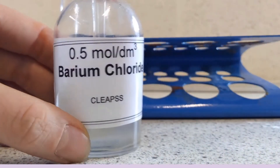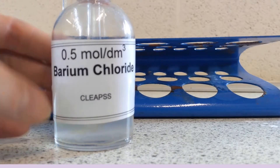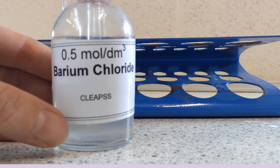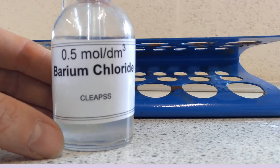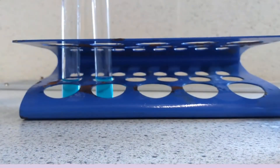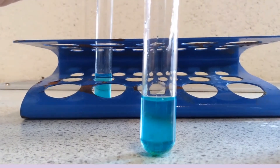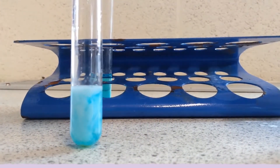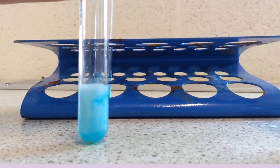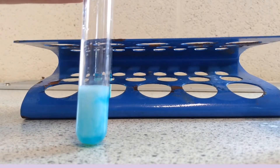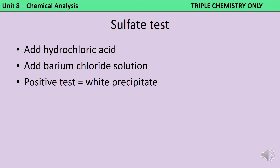Now I'm going to add some barium chloride. If sulfate ions are present, the barium ions will join with those sulfate ions to make barium sulfate, which is a white insoluble precipitate. Adding some to the first tube — not a lot happening, no sulfate ions there. But adding some to this tube, I can see that white precipitate forming. The tube still has a slightly blue colour because there is still copper sulfate in there, but the white solid has formed. The test is: add acid (usually hydrochloric acid) followed by barium chloride solution, and a positive result is a white precipitate of barium sulfate.